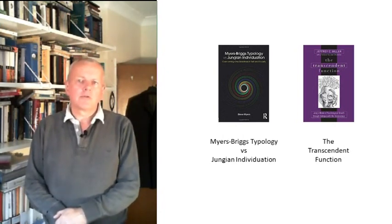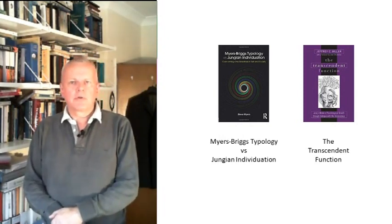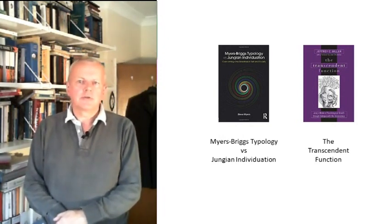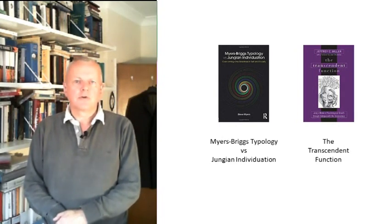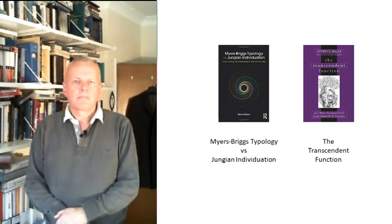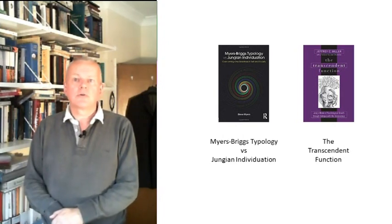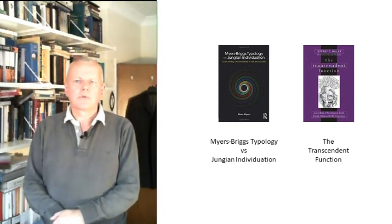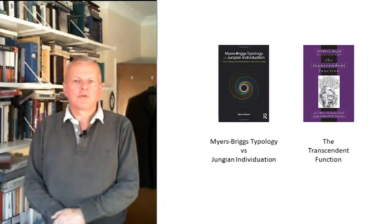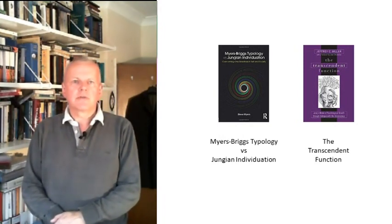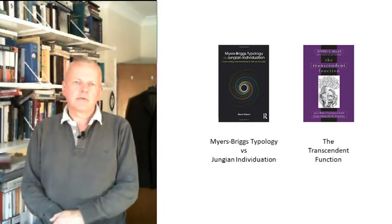You can find out more about the transcendent function either in my book, Myers-Briggs Typology vs. Jung's Individuation, or in a book by Geoffrey Miller called The Transcendent Function. My book looks at the role of the transcendent function that Jung describes in Psychological Types and how it relates to alchemy. Miller's book looks at how the transcendent function is a key theme that runs throughout most of Jung's collected works.